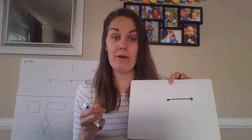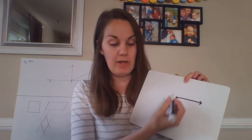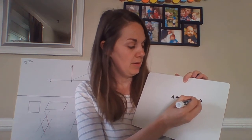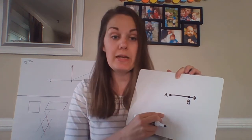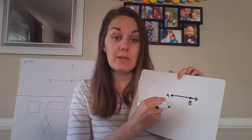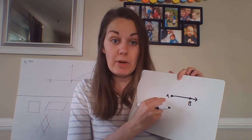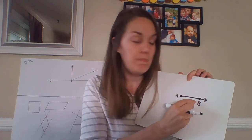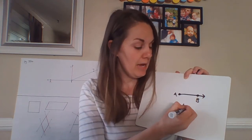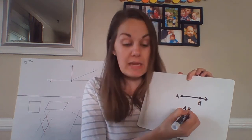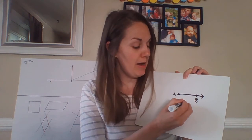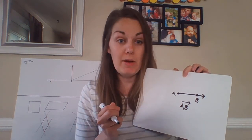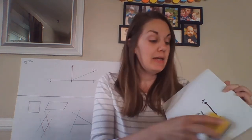A ray is something that starts at a single point and then continues in one direction without end. For example, if I had points A and B, A would be the starting point of my ray and the ray would travel through point B. I would label it AB with a ray symbol going above it.